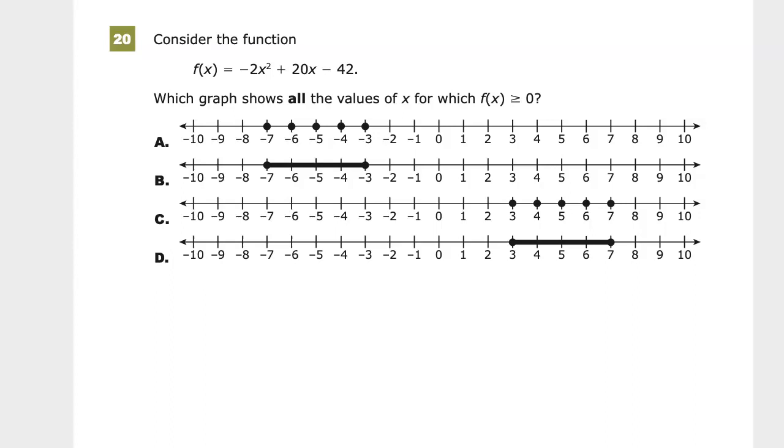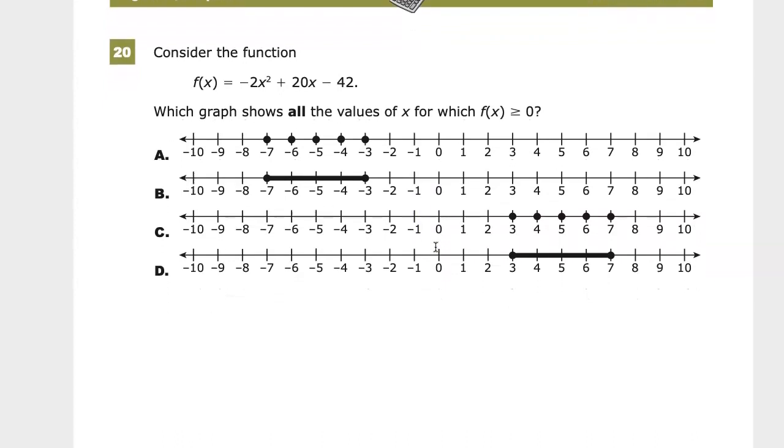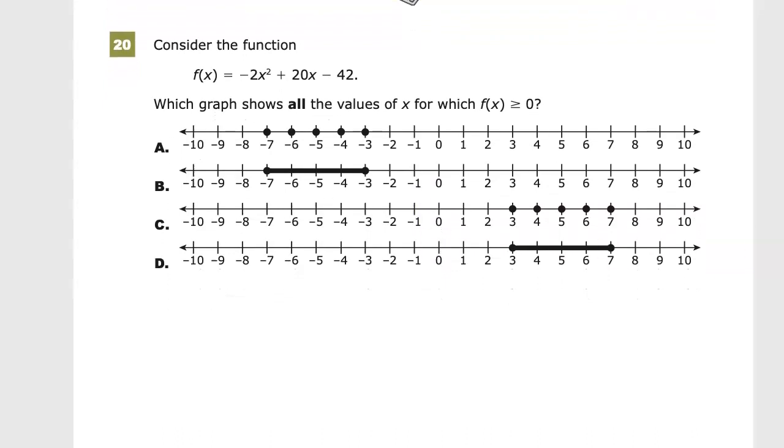This is a calculator allowed section, so I'm going to use a graphing calculator. Visually speaking, I know this graph will be a parabola because of the x², and it's going to have a maximum value because the coefficient is negative. If it were positive, it would open upward, but this opens downward.